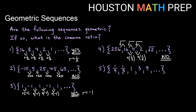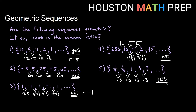For the last one: 1 ninth, 1 third, 1, 3, and then 9. It might be a little hard to tell at the very beginning, but if you look further on you can see the pattern. To go from a third to 1, you multiply by 3. 1 times 3 gives you 3, and 3 times 3 gives you 9. Thinking of 1 ninth as 1 over 9 and comparing, we're actually multiplying by 3 to get from one term to the next. Since we have a repeated multiplication pattern with the exact same ratio every time, we have a common ratio. Yes, this is geometric, and our common ratio is 3.